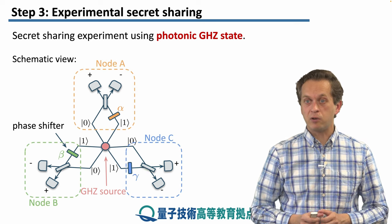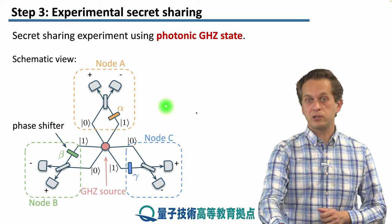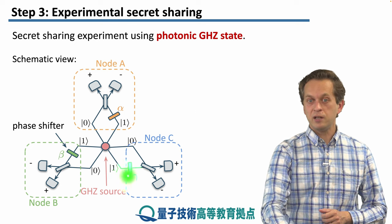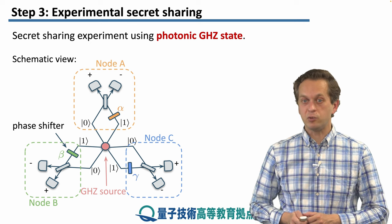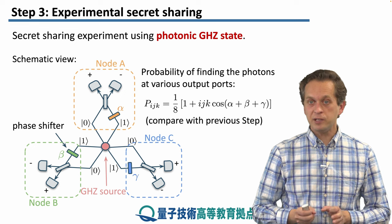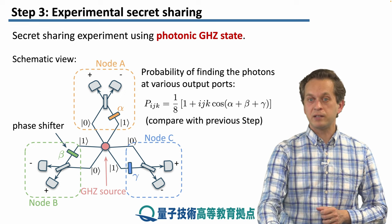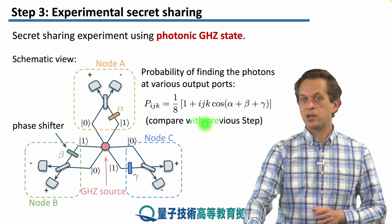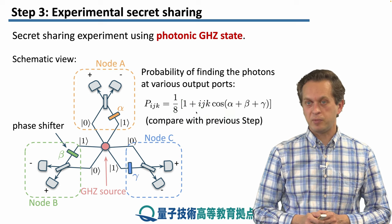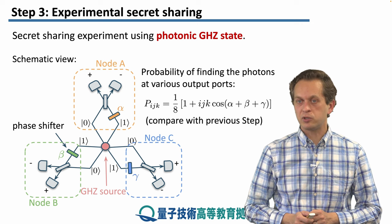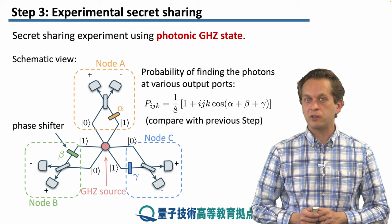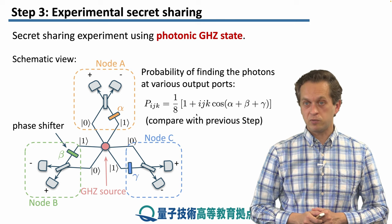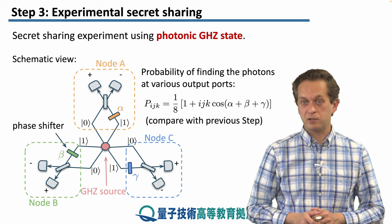In our network view, the elements at the top represent node A, the next set represents node B, and the remaining elements represent node C. The probability of finding photons at the various output ports is given by one-eighth times one plus i·j·k times cosine of alpha plus beta plus gamma. This is slightly different from what was shown in the previous step, but it can be computed from the probability amplitudes discussed in the theoretical part of the secret sharing protocol.